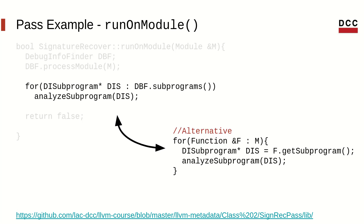An alternative approach for getting every subprogram is by iterating the IR functions and getting each subprogram individually. Notice that both manners are equivalent.